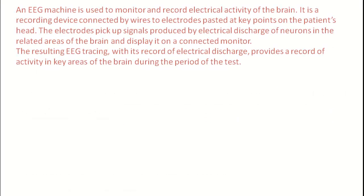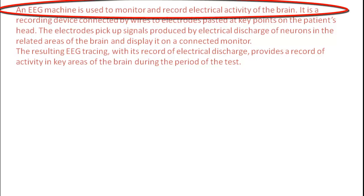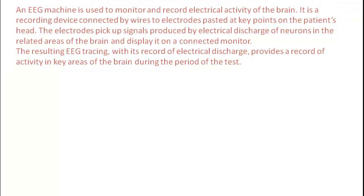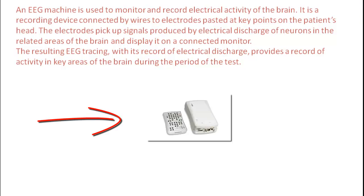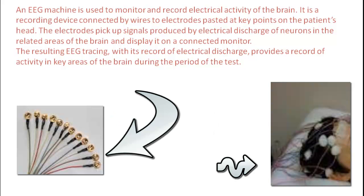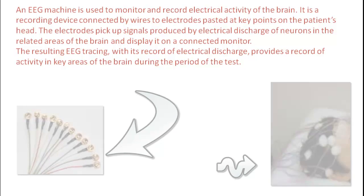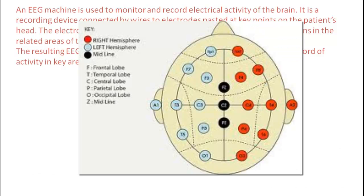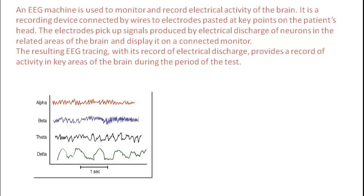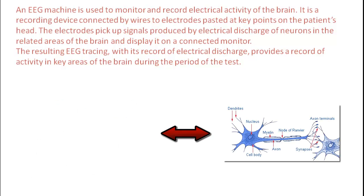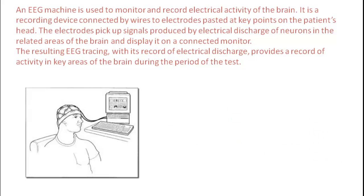First of all, if we recall back what we have learned earlier, the EEG machine is responsible for recording the brain waves. It monitors the electrical activity of the brain, and it has a normal PC with a monitor, keyboard, and basic components, and an amplifier connected to the PC. From the amplifier side, we have electrodes connected to the patient's head, connected according to the International 10-20 electrode placement system, or the Extended International 10-20 electrode placement system. These electrodes pick up the signal produced by the electrical discharges of the neurons in the related areas of the brain where they are connected, and display it on a connected monitor where the doctor can see and review it.